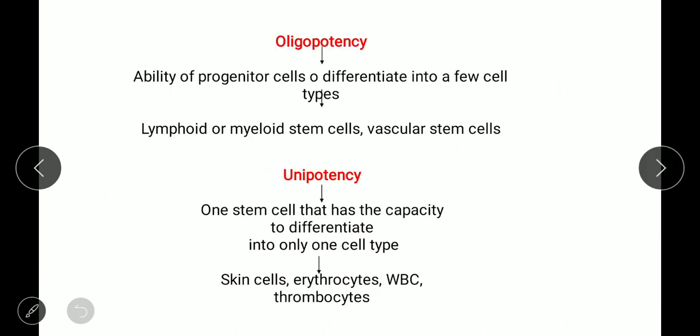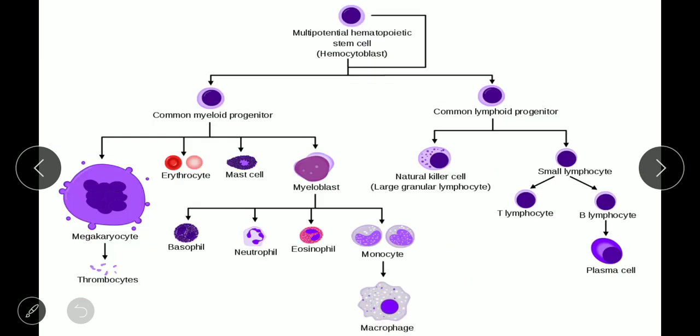Oligopotency is the ability of progenitor cells to differentiate into fewer cell types. Examples include lymphoid or myeloid stem cells and vascular stem cells. In plants, vascular stem cells give rise to xylem and phloem. The oligopotent stem cells in blood development are the myeloid progenitor and lymphoid progenitor.